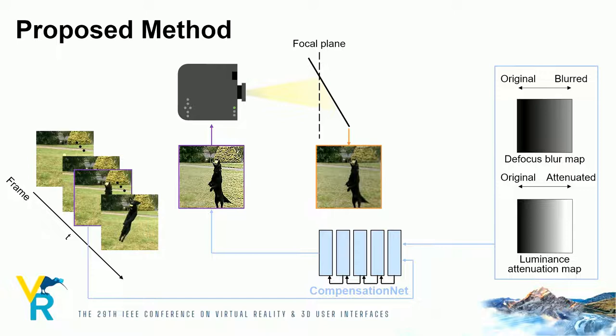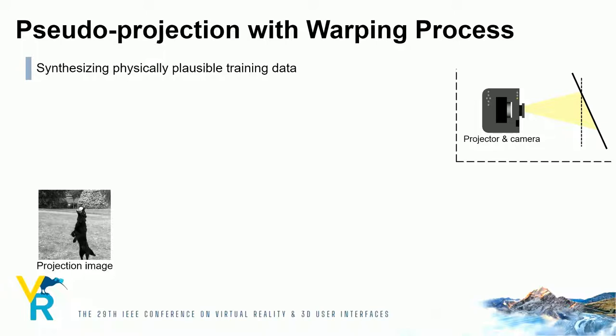We synthesized a dataset for training the network. First, we place a projector, a camera, and a projection surface in a virtual space, where the projector and the camera share the same optical axis. Then, we compute the depth image of the surface. From the depth map and the focal plane of the projector, we compute the defocus blur map, which is used to generate a blurred image.